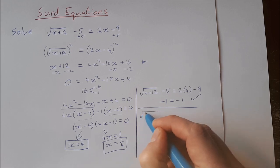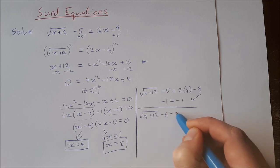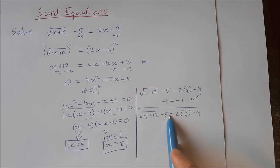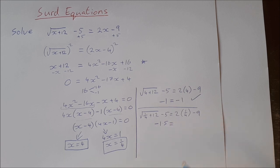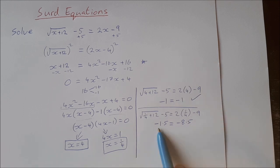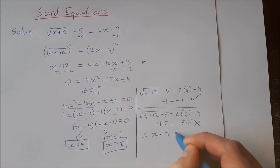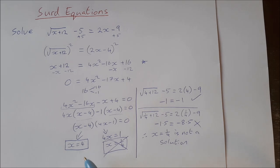Now we'll try x equals one quarter: the square root of one quarter plus 12 minus 5 equals 2 times one quarter minus 9. Working out the left-hand side gives minus 1.5, and working out the right-hand side gives minus 8.5. Of course minus 1.5 is not equal to minus 8.5, so therefore x equals one quarter is not a solution. The only solution we have is x equals 4.